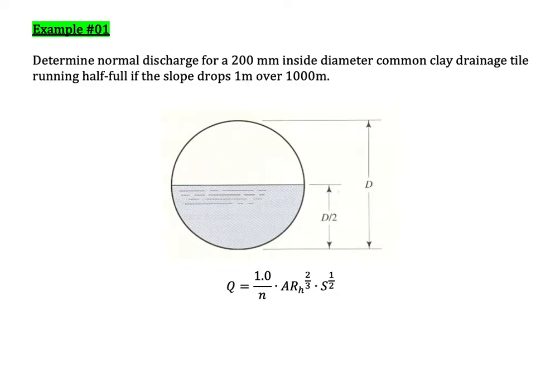We continue with the tutorial. Example one: determine the normal discharge for a 200 millimeter inside diameter common clay drainage tile running half full, if the slope drops one meter over 1000 meters. We have this circular conduit, and you must be alert because you need to use the inside diameter.